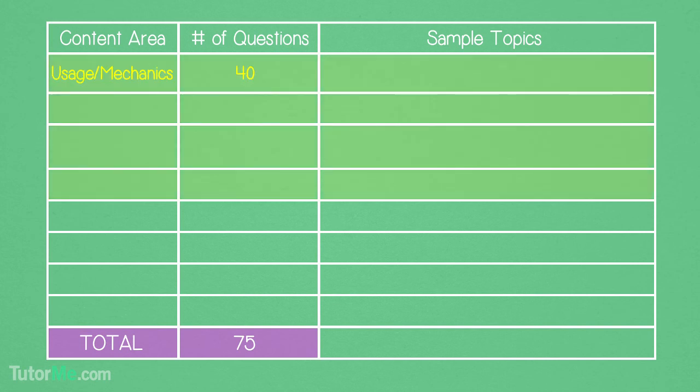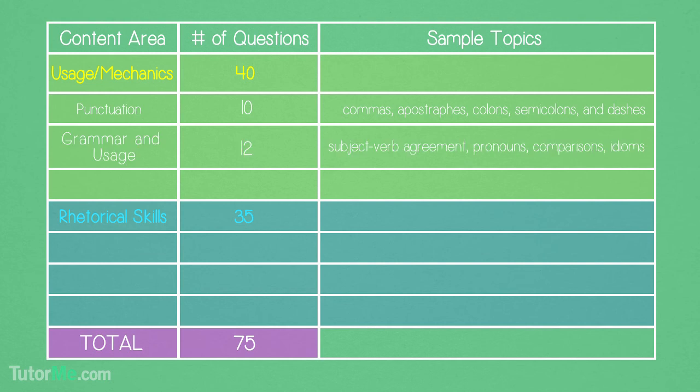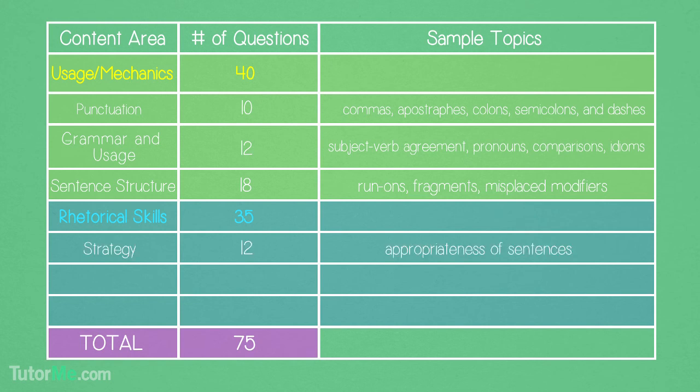The test will be broken up into two main topics: 40 questions on usage and mechanics, and 35 questions on rhetorical skills. Usage and mechanics consists of 10 questions on punctuation, 12 questions on grammar and usage, and 18 questions on sentence structure. Rhetorical skills consist of 12 questions on strategy, 11 questions on organization, and 12 questions on style.